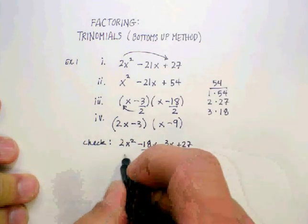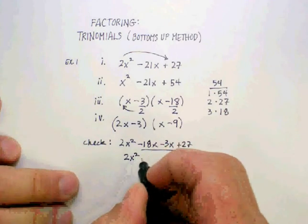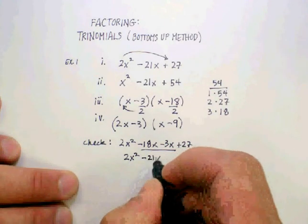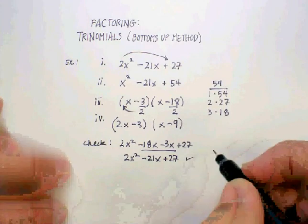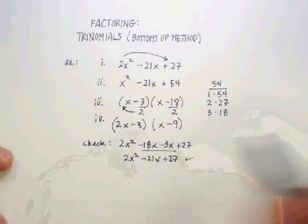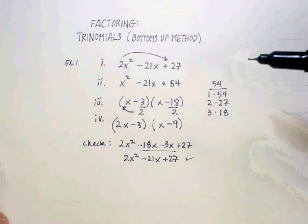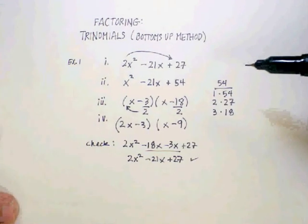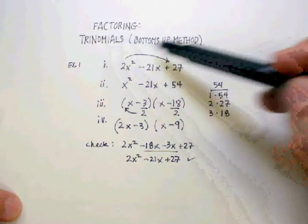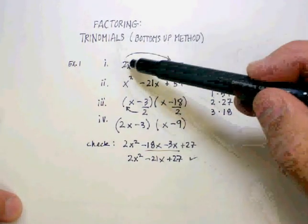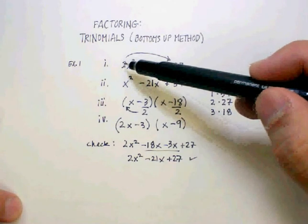Let's add our like terms here. I'm going to get 2x² - 21x + 27. The answer checks.